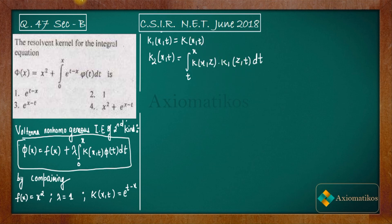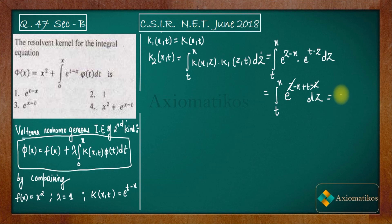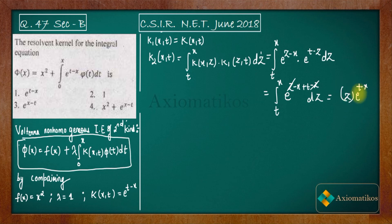Let us calculate this integral with respect to z, with limits from t to x. Adding the exponent terms — z minus x plus t minus z — the z cancels, giving t minus x. After integrating and applying limits, we get (x − t) · e^(t − x).